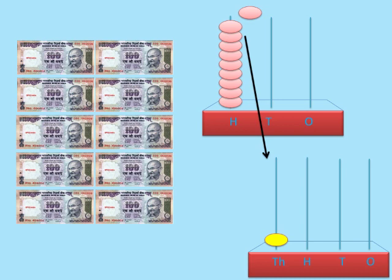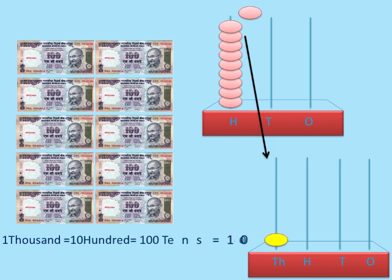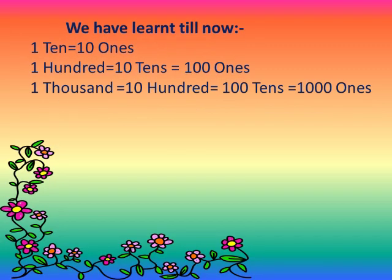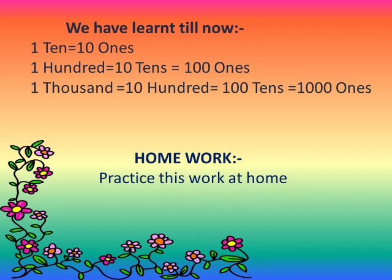So students, 1000 is equal to 10 hundreds, which is equal to 100 tens, and that is equal to 1000 ones. Your homework is to practice this work at home. Goodbye.